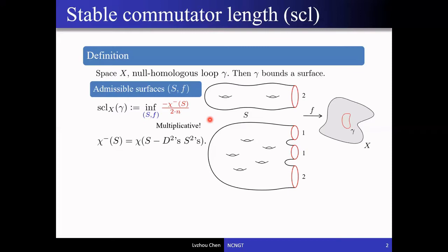This complexity has a nice property that both the numerator and denominator are multiplicative, in the sense that when we start with an admissible surface, we can take a finite cover — composing the covering map and the given map f — to get a new admissible surface. Both the numerator and denominator are multiplied by the covering degree, so the complexity stays invariant.